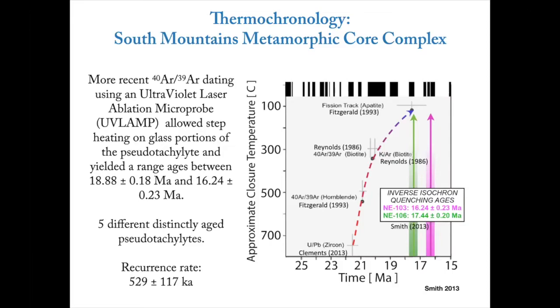There's a geomagnetic polarity timescale across the top of this figure, so you can see that while this exhumation history was occurring and while the pseudotachylites were forming, the Earth's magnetic field was in the process of reversing back and forth.